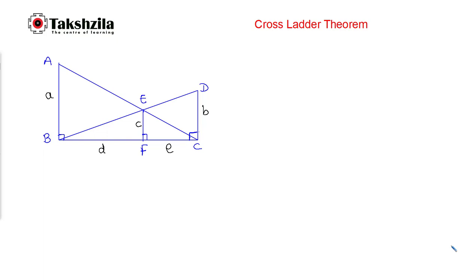Hello everyone. In this video we are going to learn a quick concept about the cross ladder theorem. This is a very commonly used diagram in which we can use similarity of triangles. Our agenda is to find the relationship between A, B, C, D and E. So let's start.